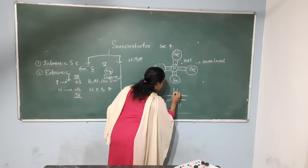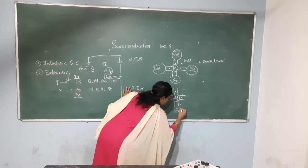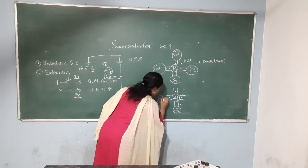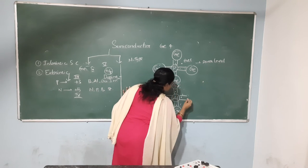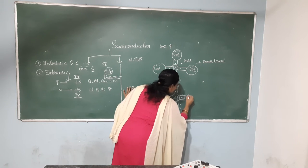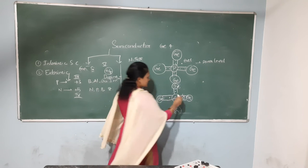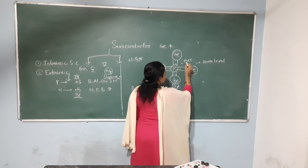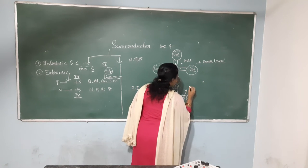Aluminium has only three electrons — one, two, three. And germanium is a tetravalent impurity with four electrons. When a bond forms between aluminium and germanium, the bond is not filled completely — one hole is there. This hole is called the acceptor level.